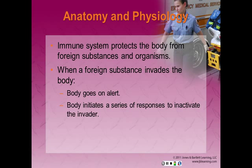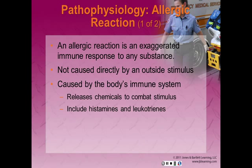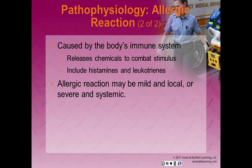The immune system protects the body from foreign substances and organisms. When a foreign substance invades the body, the body goes on alert and initiates a series of responses to inactivate the intruder. An allergic reaction is an exaggerated immune response to any substance. It is not caused directly by an outside stimulus such as a bite or sting; rather, it is caused by the body's immune system, which releases chemicals to combat the stimulus. The chemicals include histamines and leukotrienes, both of which contribute to the allergic reaction.